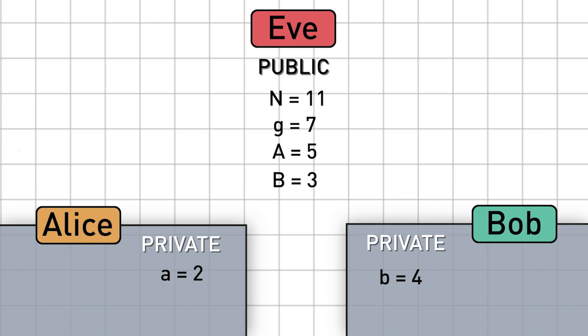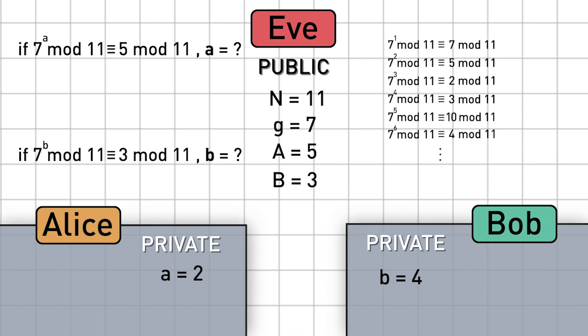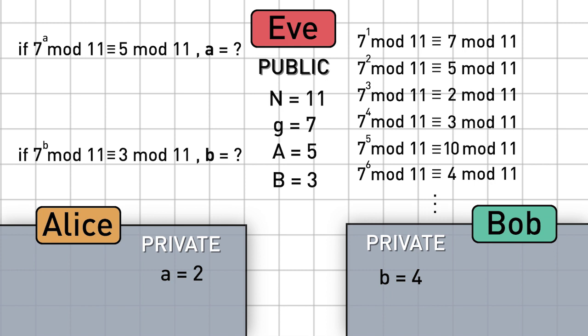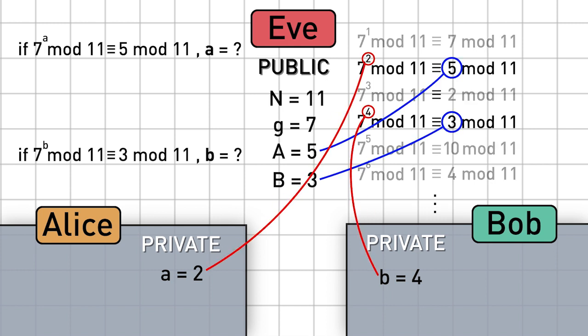If you were Eve, how would you solve these equations to find Alice's or Bob's private number? You'd probably end up listing the mod 11 powers of 7 and seeing where 5 and 3 fall in that list. Now even with numbers this small, I think you can see that that's much slower and less procedural than what Alice and Bob have to do to synthesize the 9 in the first place,